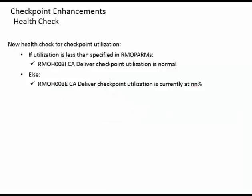We've also added a new health check for Checkpoint Utilization. If the utilization is less than specified in RMO PARMS, you'll receive message RMOH003I stating CA Deliver Checkpoint Utilization is normal. If not, you'll receive RMOH003E stating CA Deliver Checkpoint Utilization is currently at NN%.